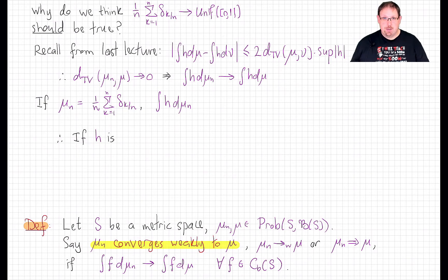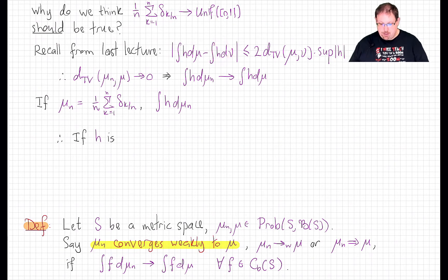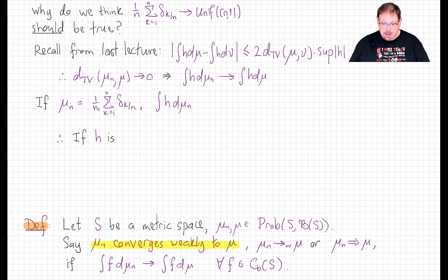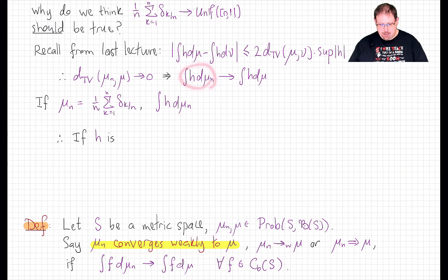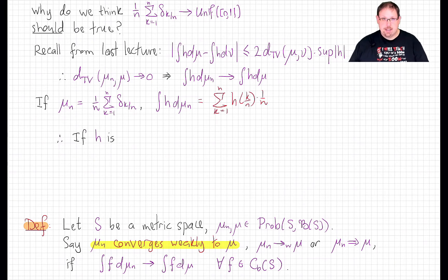Consider that total variation distance controls not only the distance between the measures of sets, but also the distance between integrals of bounded functions, as we showed last time. The integral of a bounded measurable function against mu differs from the integral against nu by an amount controlled by the supremum of that function and the total variation distance. That means if a sequence of measures converges in total variation, then the integral of any bounded measurable test function against mu_n converges to the integral against mu. Now let's look at this integral when mu is our discrete approximating measure — it's just equal to a sum, which we should recognize as a Riemann sum.